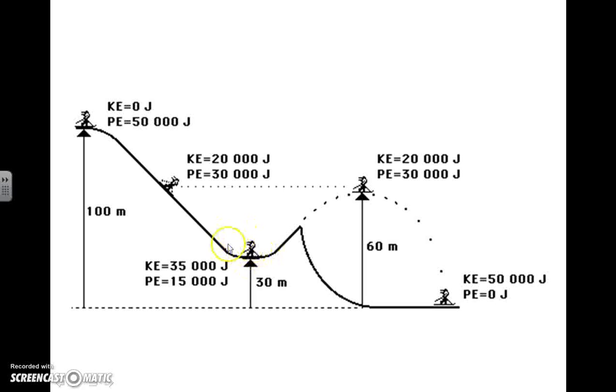They reach the relatively lowest point so far here. However, they're still 30 meters above the reference level, which is the very end of the track. So here they have mostly kinetic and some potential. After making this jump, they make quite a bit of an increase.